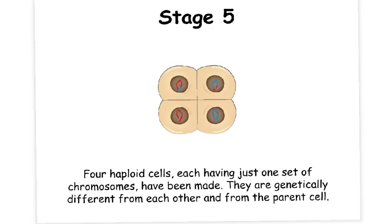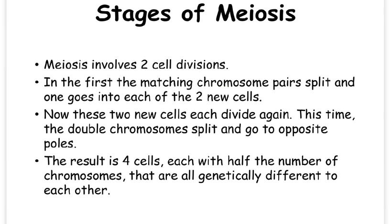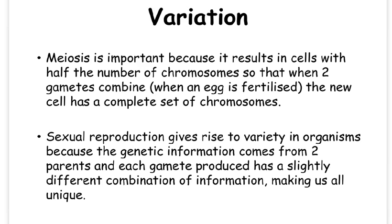These new cells are genetically different from each other and from the parent cell they originated from. To recap, meiosis involves two cell divisions. In the first, the matching chromosome pairs are split, and one goes into each of two new cells. Then these two cells divide again — this time the doubled-up chromosomes split and go to opposite poles. The result is four cells, each with half the number of chromosomes, that are all genetically different to each other. Meiosis is important because it results in cells with half the number of chromosomes, so that when two gametes combine — i.e. when an egg is fertilised — the new cell has a complete set of chromosomes. Sexual reproduction gives rise to variety in organisms, because the genetic information comes from two parents, and each gamete produced has a slightly different combination of information, making us all unique.